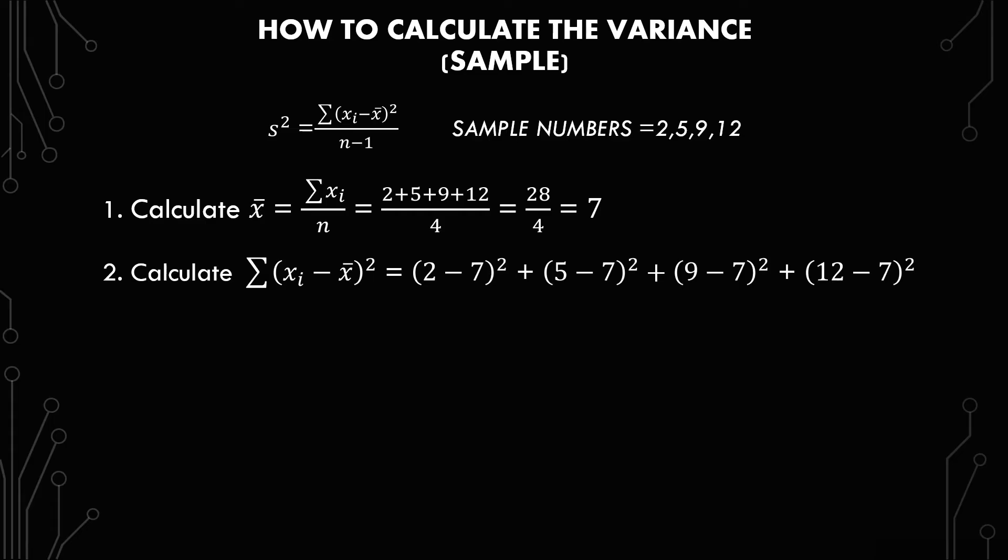So we have 2 minus 7 squared plus 5 minus 7 squared plus 9 minus 7 squared plus 12 minus 7 squared, which gives you negative 5 squared plus negative 2 squared plus 2 squared plus 5 squared, which gives you 25 plus 4 plus 4 plus 25.